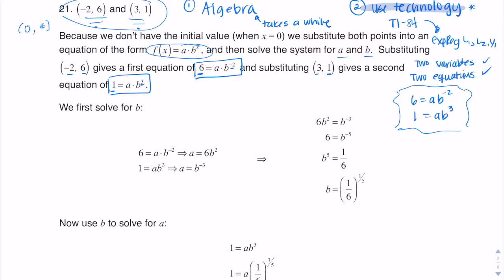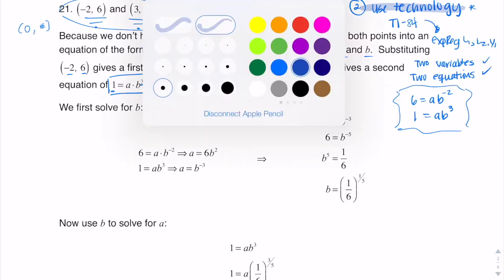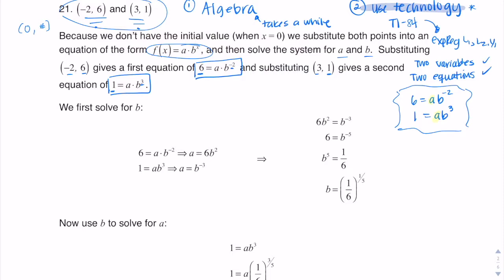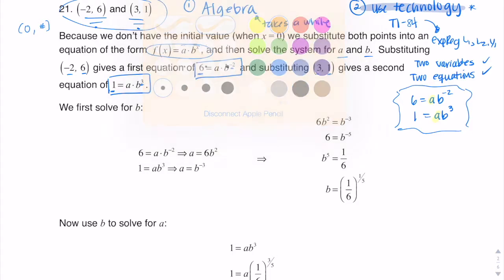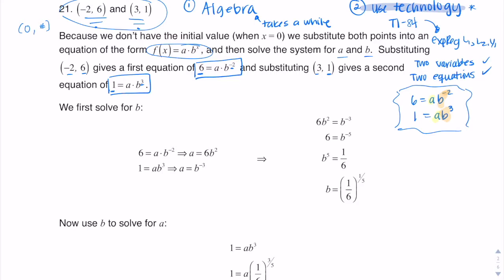It's up to you how you want to do it. When I look at this, I see that a is raised to the first power, so that might be an easier variable to solve for. It's not to say I couldn't solve each equation for b — you could — but one would involve a cube root and one a square root. So I saw it as easier to solve for the a variable. Looking at the first equation, I have six equals a times b to the negative two. If I want to solve for a, I divide by b to the negative two on both sides — this would cancel.